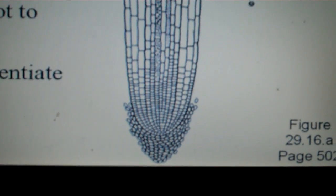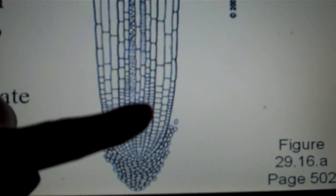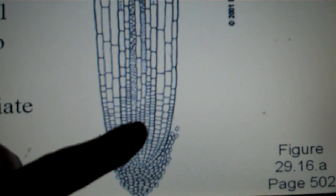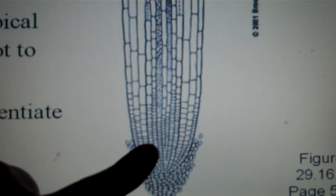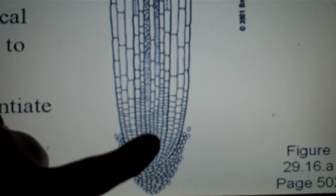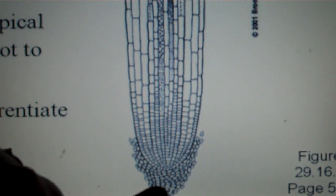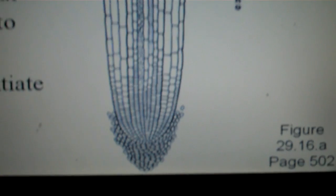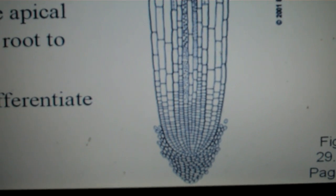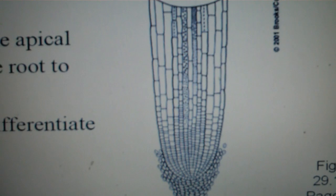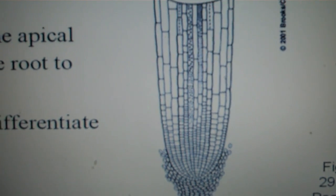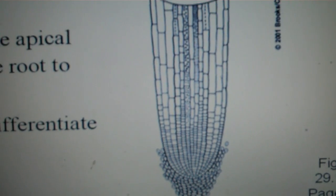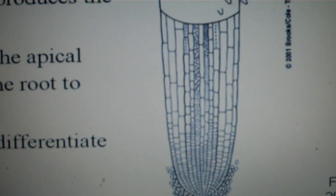This is why when we did the mitosis lab, we looked at the root tips because this is where mitosis is occurring and the roots are growing primarily from this direction. These cells are undifferentiated, which means they will eventually turn into one of the three types of tissues, ground tissue, vascular tissue, or dermal tissue.